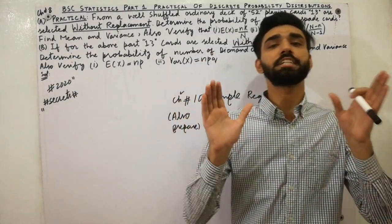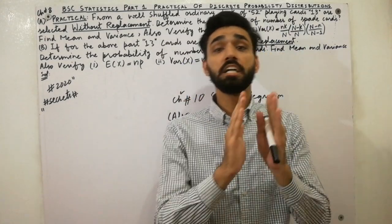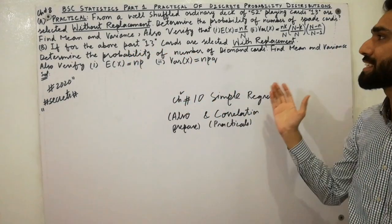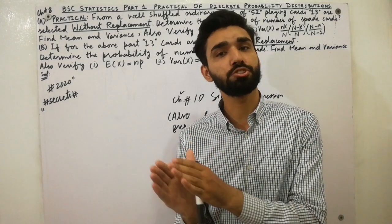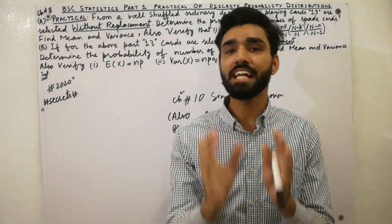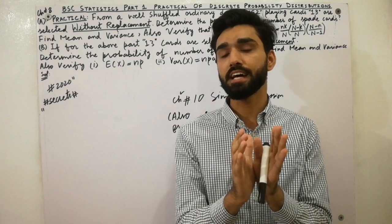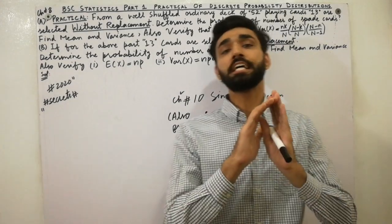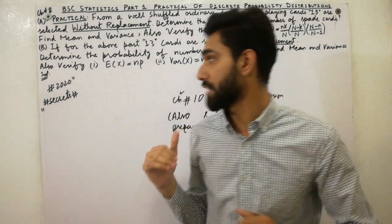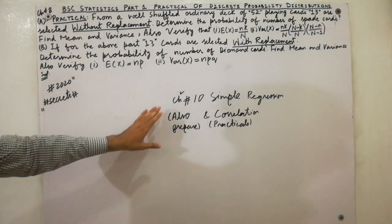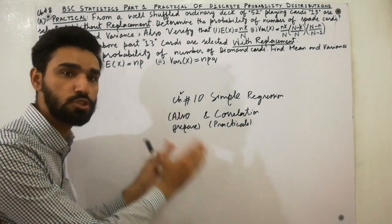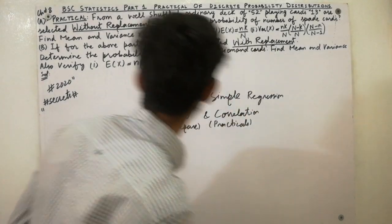Dear friends, today I am here to explain the secrets and tricks to solve practicals with replacement and without replacement of discrete probability distributions — Chapter 8 of PSD Statistics Part 1. This topic is very important for you. I will tell you secrets and tricks, so must watch this lecture completely and don't skip any step. Also, must prepare Chapter 4 and simple regression correlation, as those practicals are also very important.